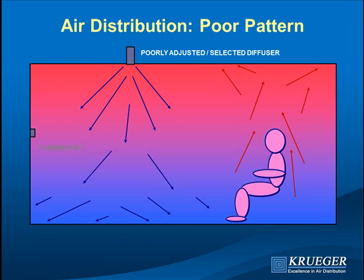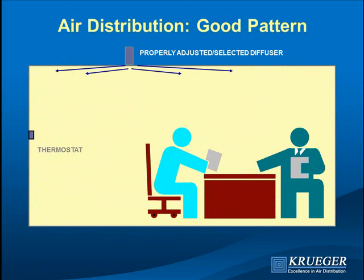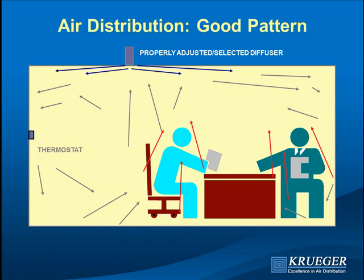What we want is for the diffuser to provide a horizontal pattern. In a nine-foot ceiling, a linear diffuser should almost always be set to blow horizontal, even near windows. The goal is to get heat rising from people and equipment well mixed so the thermostat can sense what's happening, resulting in uniform temperature in the occupied zone.